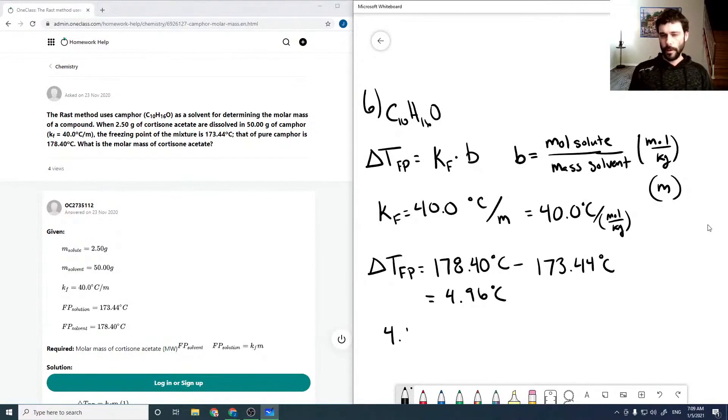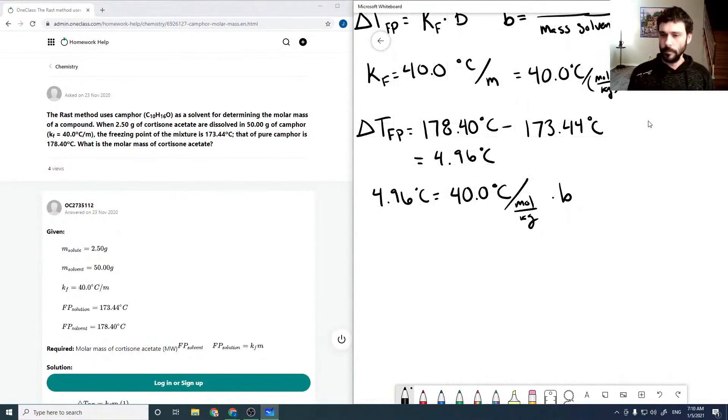So then 4.96 degrees Celsius is equal to 40.0 times b, where our b is moles of solute over our mass of solvent. So our mass of solvent is 50.00 grams, or putting into kilograms, 0.050 kilograms. So that's our mass of solvent in kilograms.